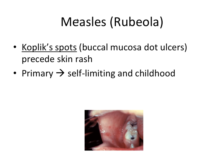The next one is measles, also referred to as rubeola. The most important thing to know here is Koplik spots — a super common topic that comes up on exams. These are little red dots on the buccal mucosa, and they precede the classical skin rash that you get with measles. Because we're talking about a virus, we have a primary infection here — again self-limiting and mostly affecting children, a common thread through all of these different viruses.